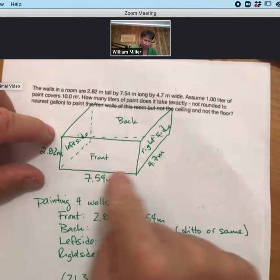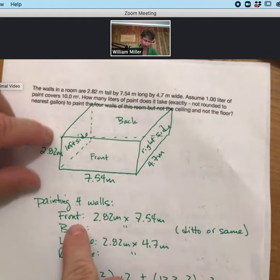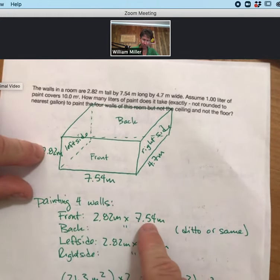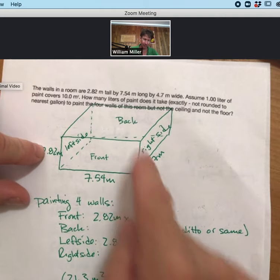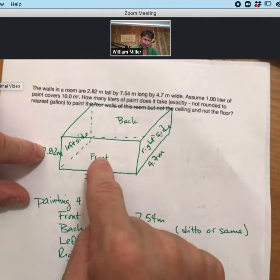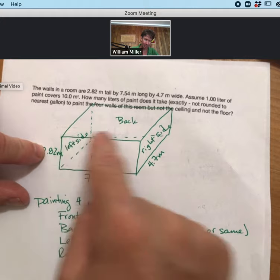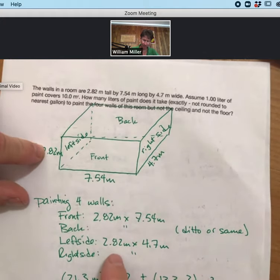We have one wall, the front, which is 2.82 times 7.54 meters. The back has the same dimensions. The left and right sides also have the same dimensions as each other.